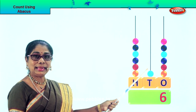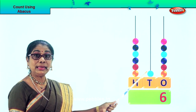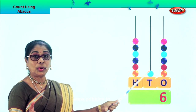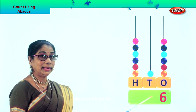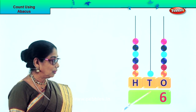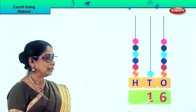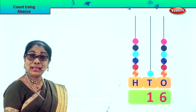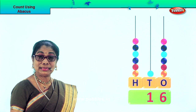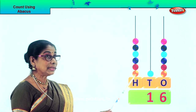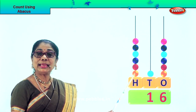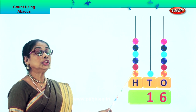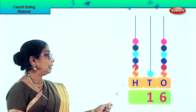Now we go to the 10s — count in 10. There is one single bead here, that is 1 ten. So we put 1 here. Now go to the 100s place — each bead is 100. Count in 100s: 1 hundred, 2 hundreds, 3 hundreds.